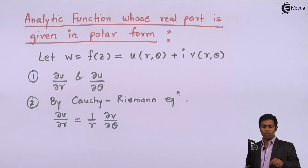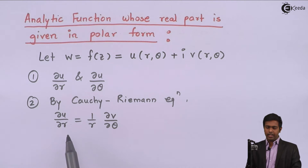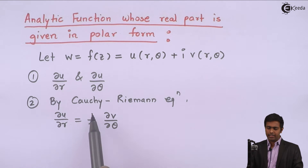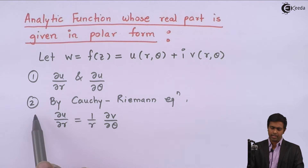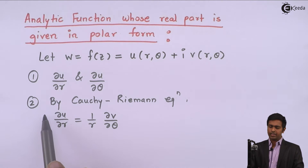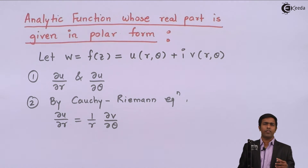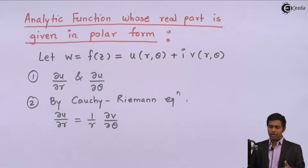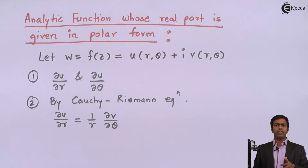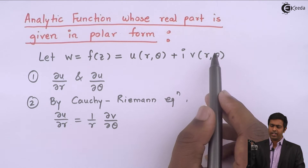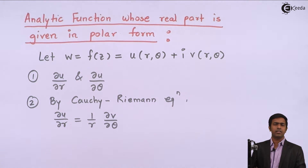Using this Cauchy-Riemann equation, we have the value of ∂U/∂R. We substitute that value, take R to the other side so it multiplies over, and we get the value of ∂V/∂θ. Then by the method of variable separation and by integrating both sides, we get the value of V. Once we have V, we put both V and U into F(Z) to get the analytic function. It's that simple.